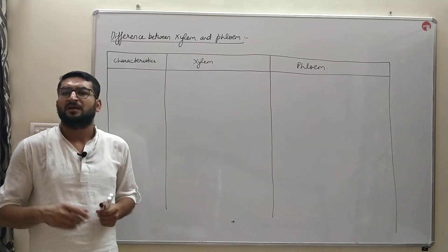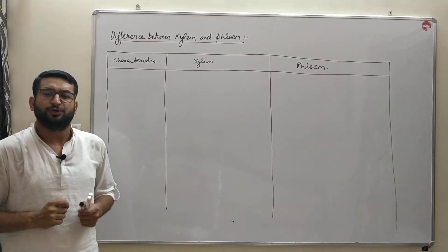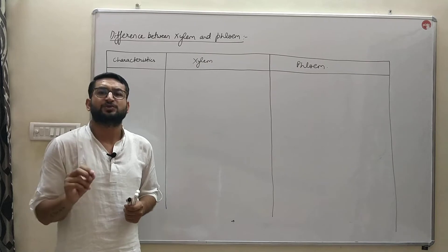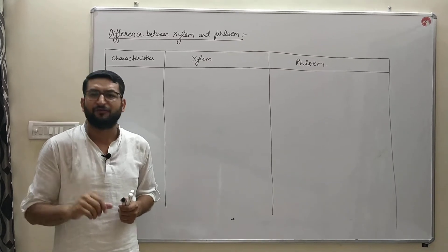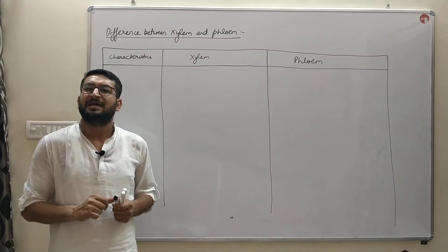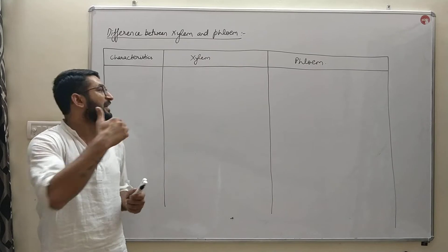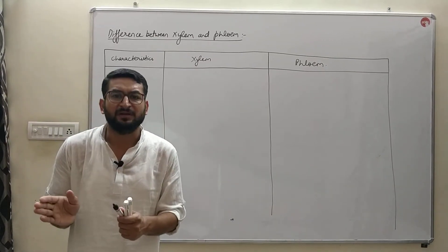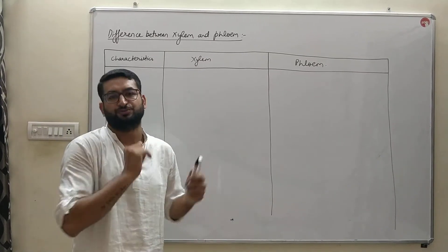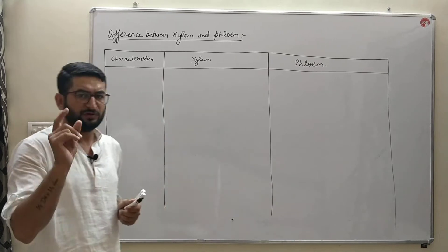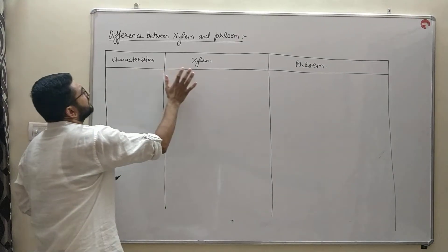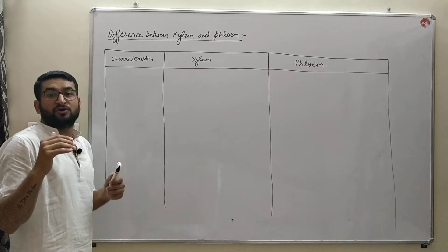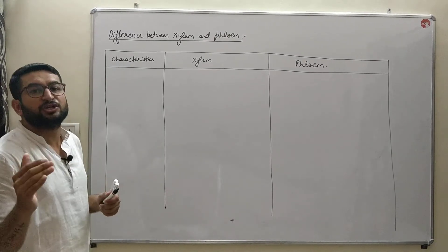Hello students. In this video we will discuss two differences. The first one is between the xylem and the phloem, and the second one we will discuss after this difference, that is between the simple and the complex permanent tissue. First we will discuss the difference between xylem and phloem, that is the complex permanent tissue types.